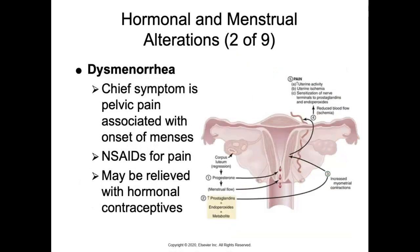Patients with dysmenorrhea suffer pelvic pain associated with the onset of menses, especially within the first one to three days. They'll have cramping pain in the suprapubic region that may radiate to their thighs or sacral area — a low back pain — as well as nausea, diarrhea, and headaches.